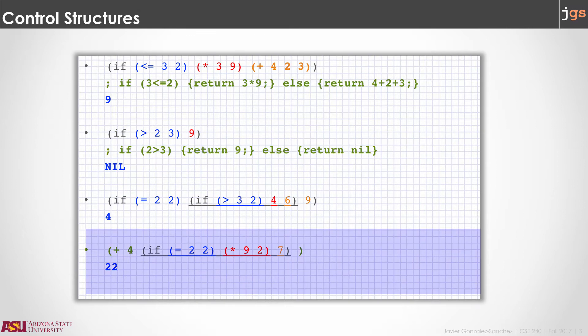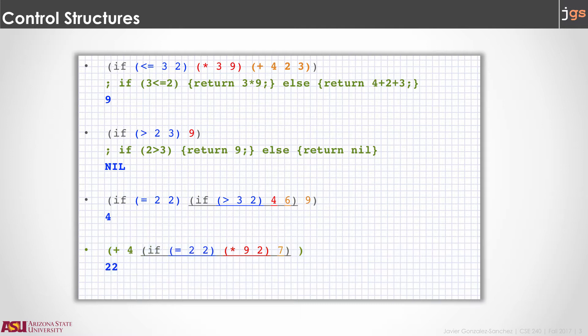Because the if returns a result, you can use the if as a parameter. For instance, here the addition is 4 plus the result of the if. To do the addition, we first calculate the result of the if: the condition is 2 equals 2, which is true. Therefore, you do the multiplication of 9 times 2, which is 18. That is the result of the if. Then you add 4, and the full result of that line is 22.